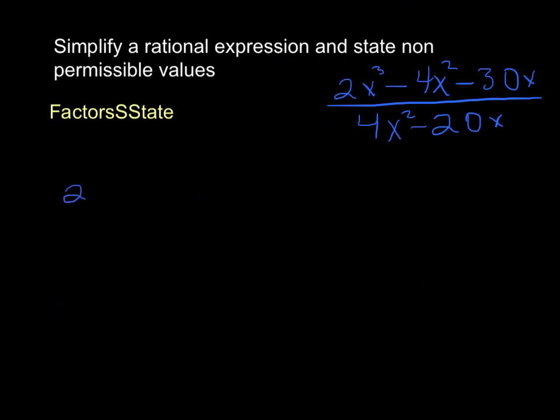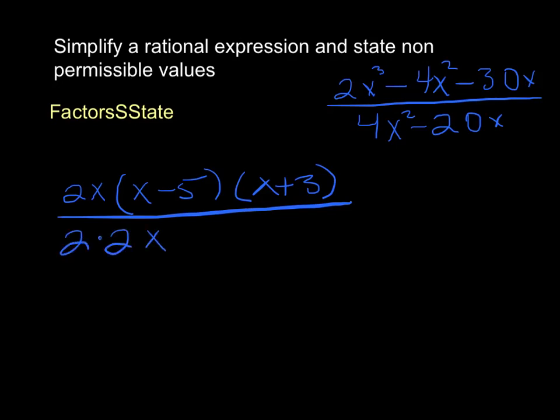So if we factor, we end up with 2x bracket x minus 5, and x plus 3 for the numerator. And then we factor the denominator as well. So we end up with 2 times 2x, x minus 5 in a bracket, and that's our factored out rational expression. So we're going to notice something here, that we've got an x minus 5 here, and an x minus 5 here. We've got an x here, an x here, a 2, and a 2.